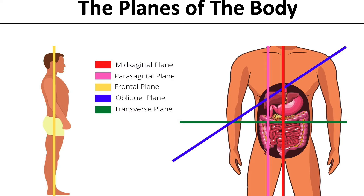The mid-sagittal plane is the plane directly in the middle of the body. It also has different names — some people just say sagittal. We also have the parasagittal plane, which is similar to mid-sagittal but a little bit off to the side.